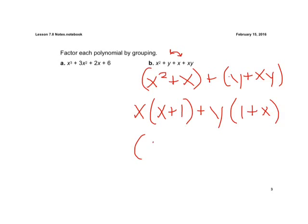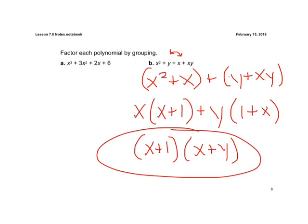If we rewrite that, if we pull that x plus one out front, what we have left over is our x plus y, and we have our factored form, and we're finished.